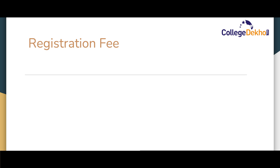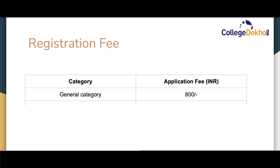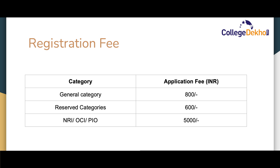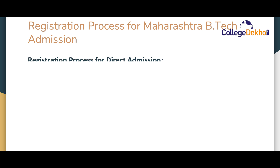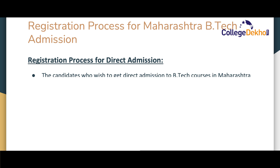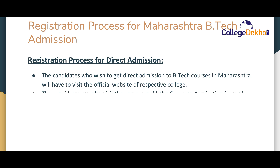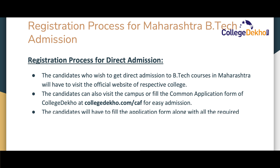The counseling fee for Maharashtra B.Tech admission is 800 rupees for general category candidates, 600 rupees for reserved categories, and 5,000 rupees for NRI, OCI, or PIO categories. For direct admission, candidates who wish to get direct admission to B.Tech courses in Maharashtra will have to visit the official website of the respective college, visit the campus, or fill the common application form of CollegeDekho at the given link. Candidates will also have to fill the application form with all required documents and pay the application fee.